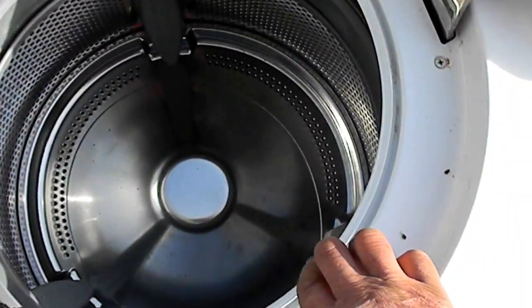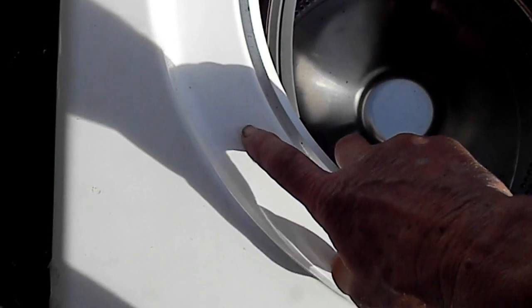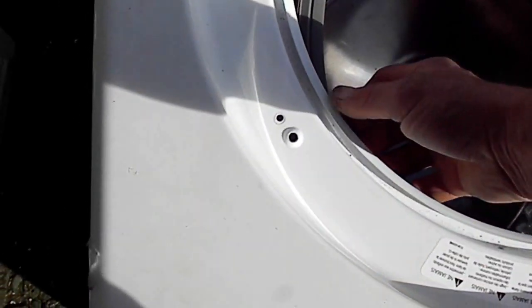You just pull the rubber from the lip of the machine. Once you do that, you remove the three screws and you can pull your door switch out.